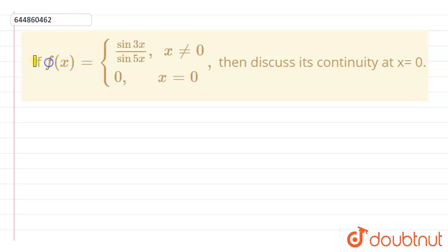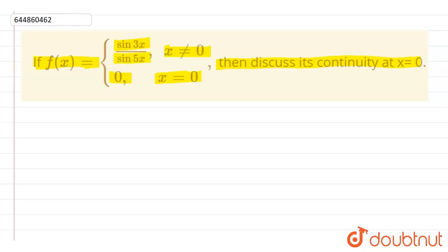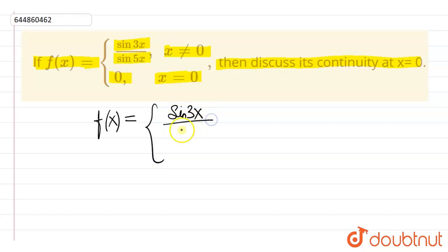Hello student, the question is: if f of x is equal to sin 3x divided by sin 5x when x is not equal to 0, and f of x is equal to 0 when x is equal to 0, then discuss its continuity at x equal to 0.